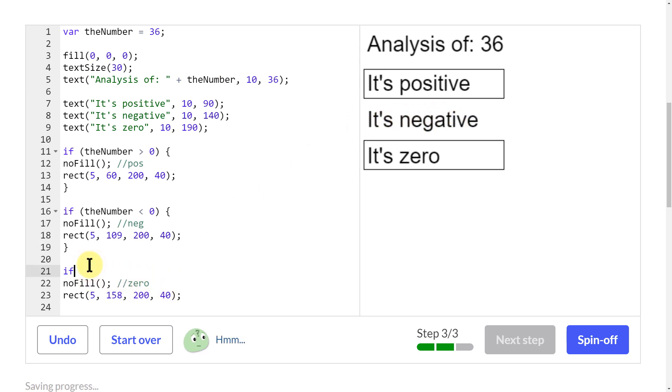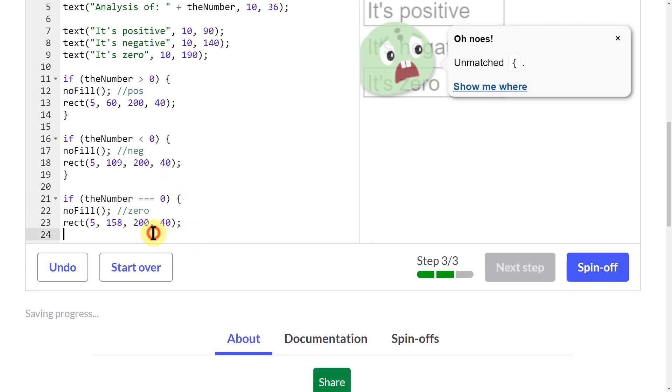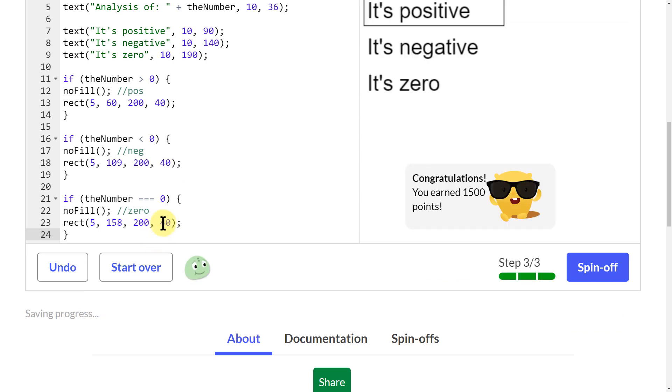And one more if statement. This time I need to do equals to zero. And squiggly brackets. And close my squiggly brackets.